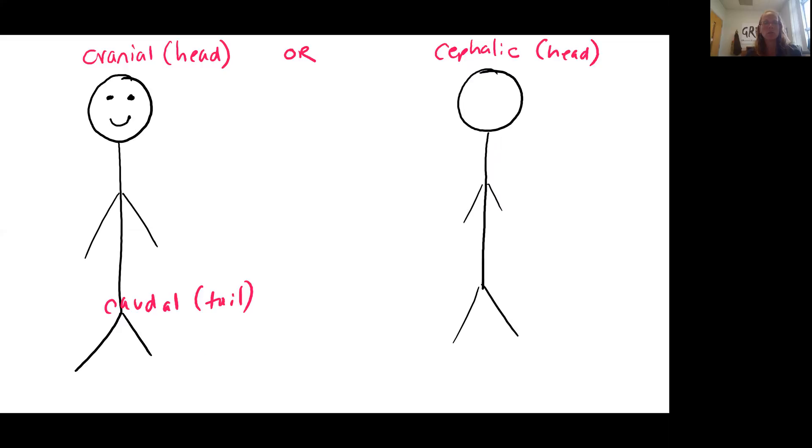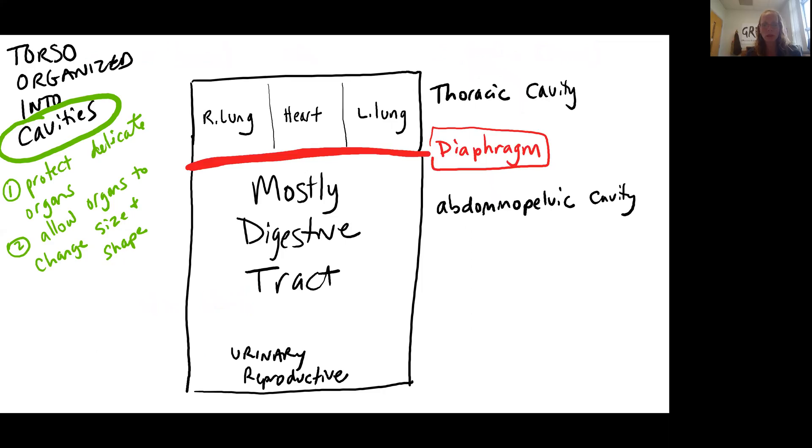And then we have the term cranial or cephalic, which is referring to head and both terms can be used. And then caudal refers to the tail. So for our body sets, our coccyx.